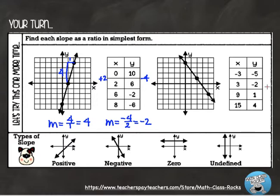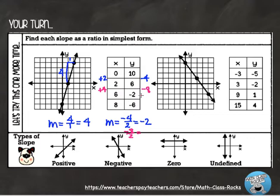I want to show you something else with this one. If instead I go from six to negative two in y, that's subtracting eight — and the corresponding x change from two to four is adding four. But negative eight over positive four still gives me negative two. So even if the numbers in the table look different depending on which rows you pick, the ratio will always reduce to the same slope.